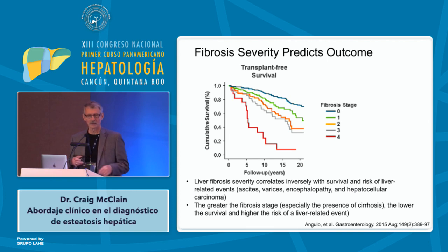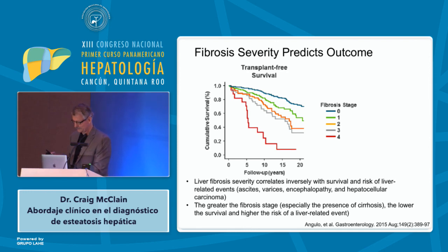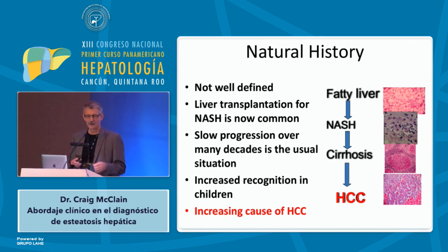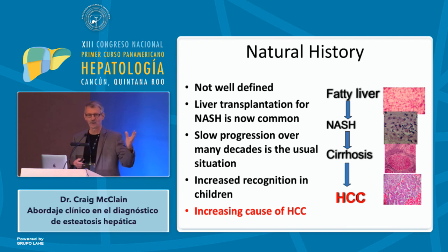Fibrosis is very important. Paul Angulo did original studies showing that the more severe the fibrosis, the worse the outcome. Fibrosis is also worse for cardiovascular outcomes, not only liver outcomes. The natural history isn't totally well defined, but we know NASH is now a major cause for liver transplantation. It's usually slowly progressive and increasingly recognized in children. In Louisville, Kentucky, about 15 years ago, we first described NAFL in children as more prevalent in Hispanic children, and importantly it's an increasing cause of liver cancer.